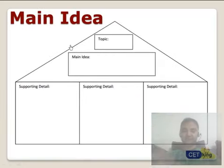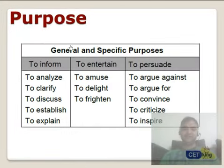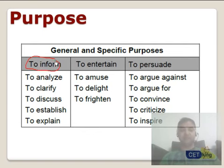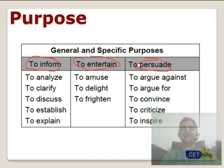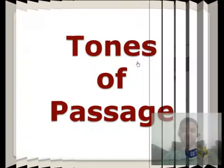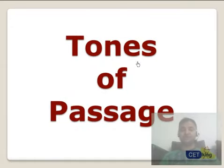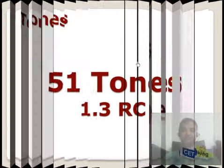Followed by the main idea — I normally recommend filling the 'house of main idea' diagram while solving the RC so that you get 100% marks in this area. Last is the purpose of the passage, which comes down to three things: the objective is either to inform, to entertain, or to persuade. Any kind of purpose can fall into these three parts. Anyway, that's not the part of today's video — I am going to focus on the tones of the passages only.